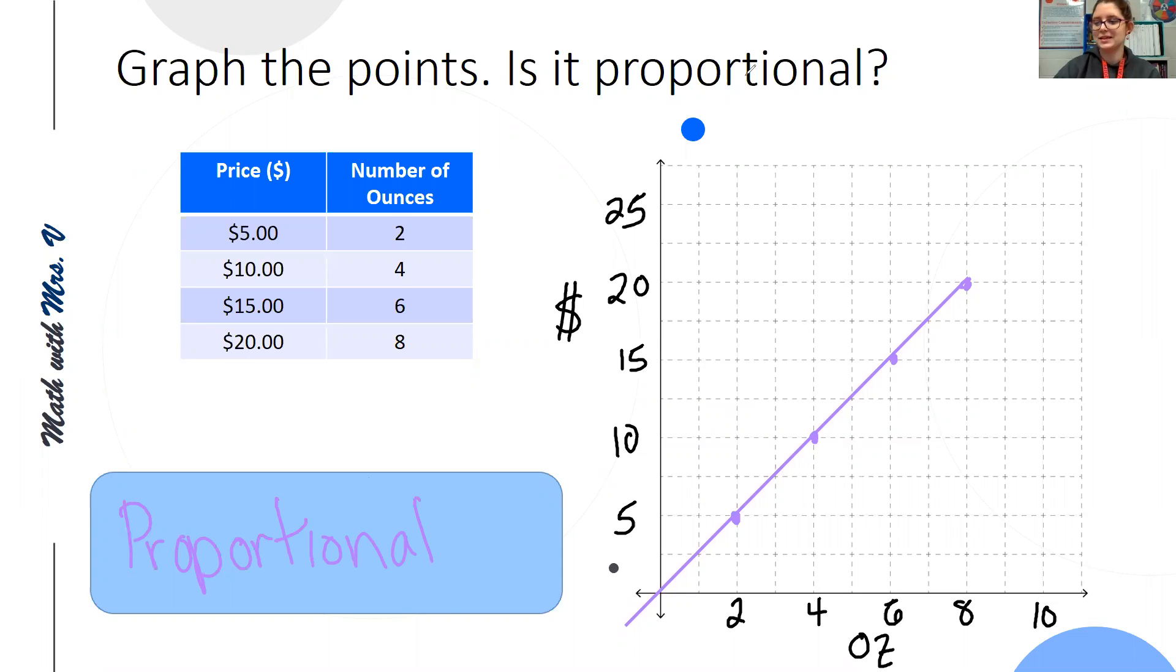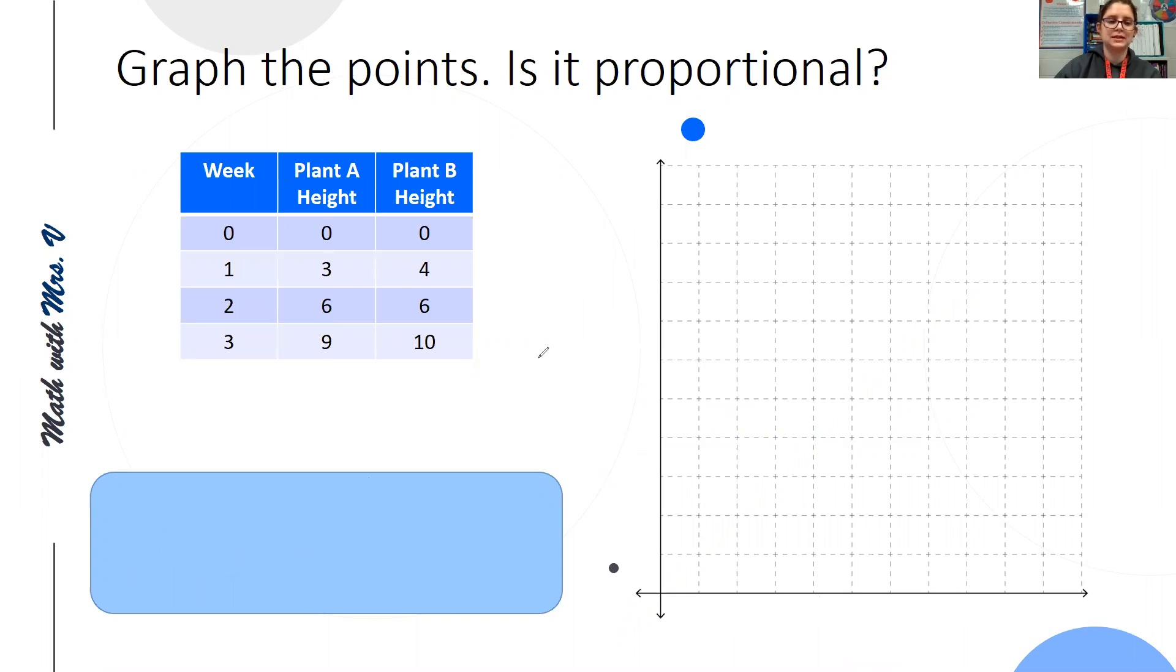Then we have one more example to look at. So we have two plants, plant A and plant B, and they've been growing for three weeks, and so we've been asked to graph and tell if they're growing in a proportional manner. So I'm going to put the weeks along the bottom, and I'm going to put the height in inches, let's say, along the side. Plant A is going to be red. Let me label. One, two, three, four, five, six, seven, eight, nine. One, two, three, four, five, six, seven, eight, nine, ten.